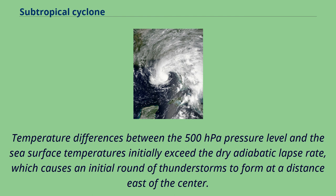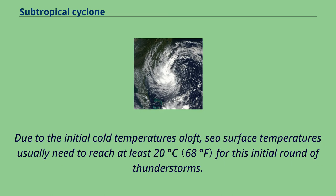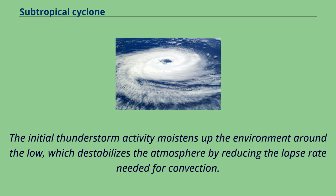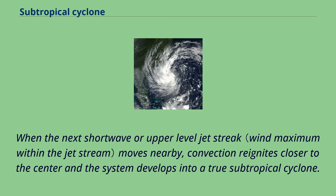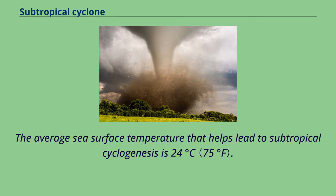Temperature differences between the 500 hectopascals pressure level and the sea surface temperatures initially exceed the dry adiabatic lapse rate, which causes an initial round of thunderstorms to form at a distance east of the center. Due to the initial cold temperatures aloft, sea surface temperatures usually need to reach at least 20 degrees Celsius for this initial round of thunderstorms. The initial thunderstorm activity moistens up the environment, destabilizing the atmosphere by reducing the lapse rate needed for convection. When the next shortwave or upper-level jet streak moves nearby, convection reignites closer to the center and the system develops into a true subtropical cyclone. The average sea surface temperature that helps lead to subtropical cyclogenesis is 24 degrees Celsius.